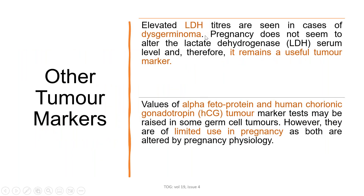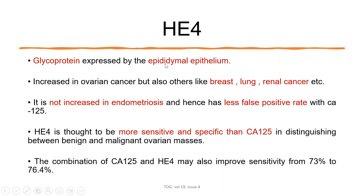Other tumor markers: LDH indicates dysgerminoma and is a very useful marker in pregnancy because its level is unaffected during pregnancy. Alpha-fetoprotein and hCG are generally not used in pregnancy as their levels also rise, making them of limited utility. HE4 is a glycoprotein expressed by epididymal epithelium; it is increased in ovarian cancer and also in breast, lung, and renal cancer, but is not increased in endometriosis and has a lower false-positive rate than CA-125. HE4 is thought to be more sensitive and specific than CA-125, and combining both raises sensitivity from 73% to 76.4%.